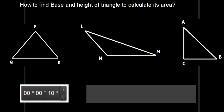Here we have taken three triangles. Triangle PQR is an acute angle triangle. Triangle LMN is an obtuse angle triangle. And triangle ABC is a right angle triangle.